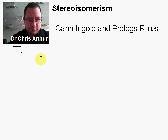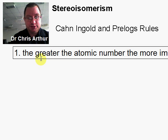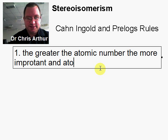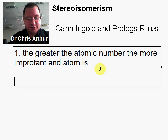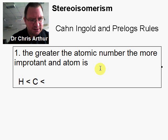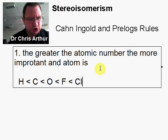The first rule is that the greater the atomic number, the more important an atom is. Hydrogen is not important at all. Carbon is more important than hydrogen, but carbon is less important than oxygen, which is less important than fluorine. And fluorine itself is less important than chlorine. So just as the atomic number goes up, the importance goes up. That's the first rule.